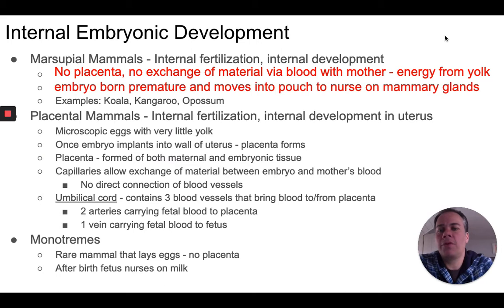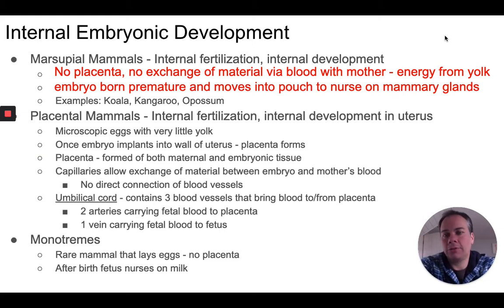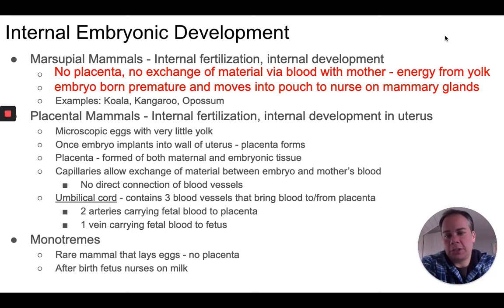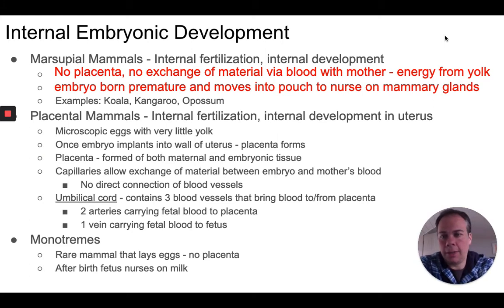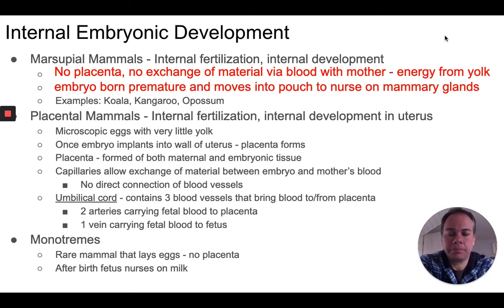The mother gives birth to a very immature embryo which then crawls into a pouch in the mother's body where the mammary glands are located. The marsupial mammal stays in that pouch completing its development, nursing using milk from the mammary glands for energy, and eventually when it's ready to become independent it emerges from the pouch. Examples of marsupial mammals include koalas and kangaroos, and in our area, opossums.